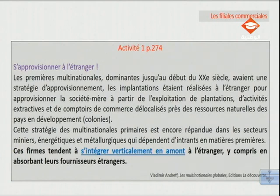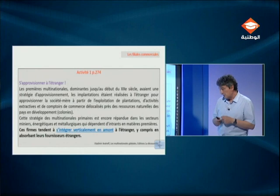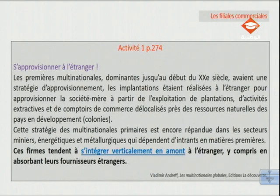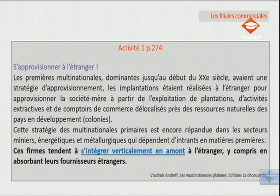Pourquoi ces firmes ne se sont pas contentées d'importer les matières premières dont elles ont besoin ? La réponse est que ces firmes tendent à s'intégrer verticalement en amont à l'étranger, y compris en absorbant leurs fournisseurs étrangers. Ces firmes multinationales ne se contentent pas d'importer l'énergie dont elles ont besoin, mais elles implantent des filiales commerciales parce qu'elles veulent s'intégrer verticalement en amont. L'intégration verticale, c'est une concentration verticale, une des trois formes du regroupement d'entreprises, notion vue lors de la deuxième partie du programme.